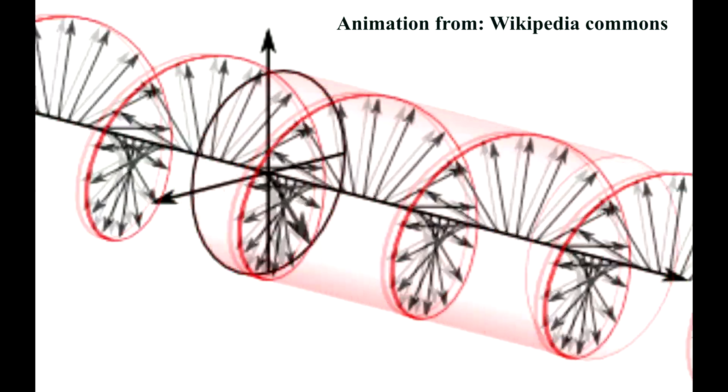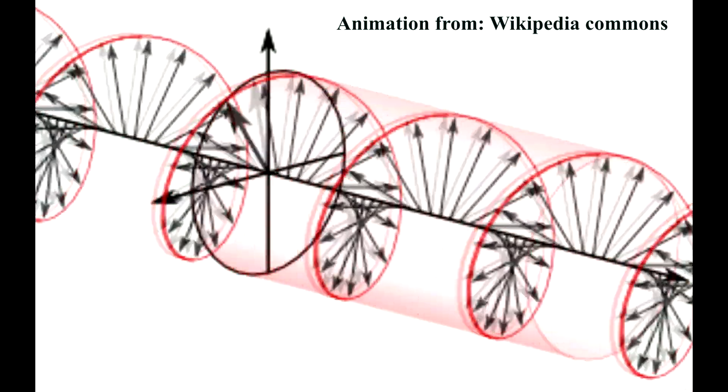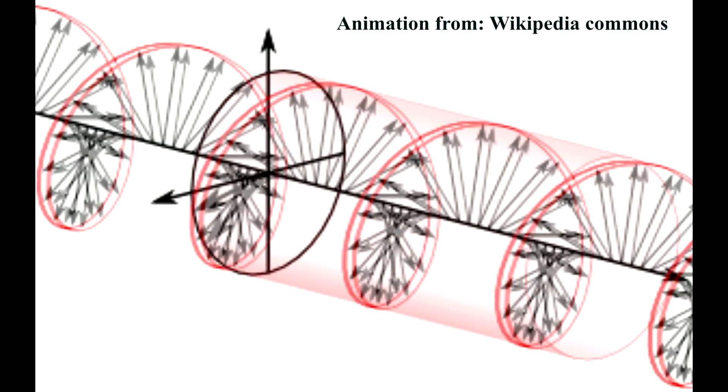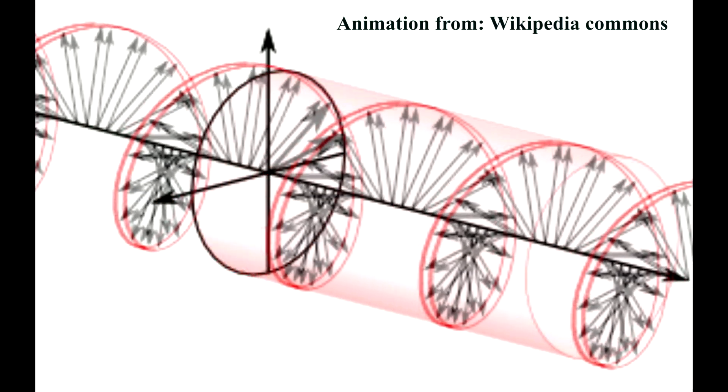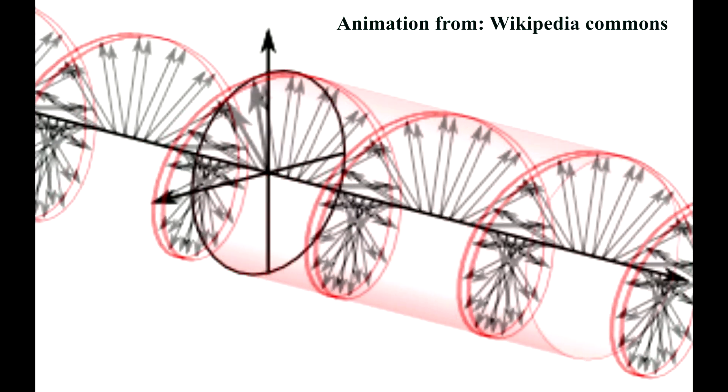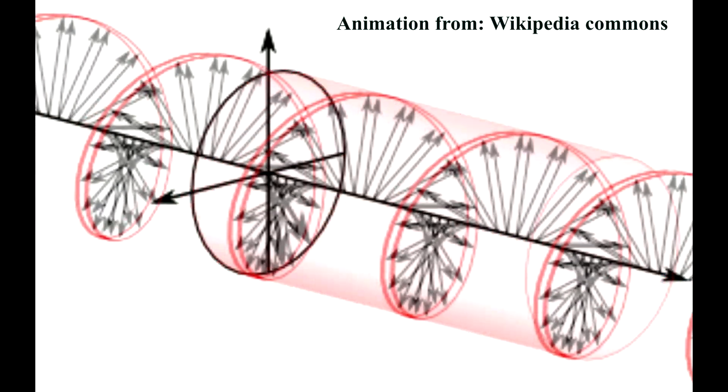With circular polarization, the magnitude of the electric field is constant at all times because of this phase difference. The result is a wave that rotates around the axis in a circular direction. Changing the phase shift from positive 90 degrees to negative 90 degrees simply changes the direction of rotation.